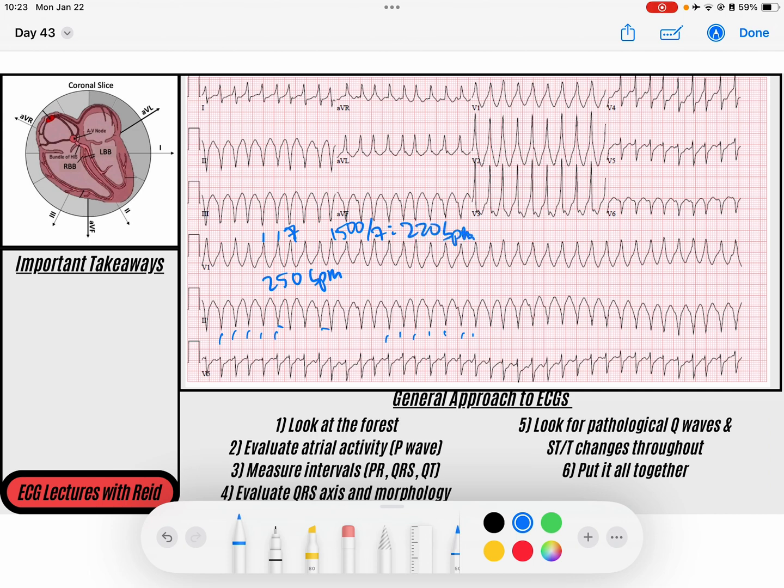So we've got a tachycardia and we would call this a wide complex tachycardia. I don't see those nice sharp QRSs that we like to see in our normal AV node conduction.